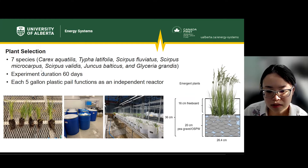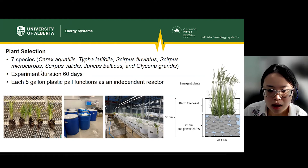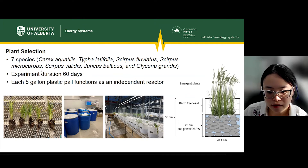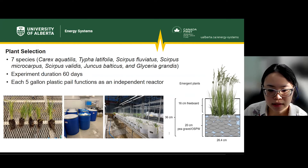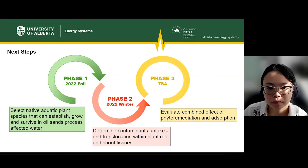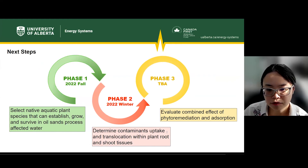We just started a few weeks ago, so I don't have any data or results to show today. But at the end of this experiment, we are going to select the three healthiest and most productive plant species for the next step of our research. We are now in phase 1 and we are going to have a phase 2 and a phase 3 sequentially in the future.